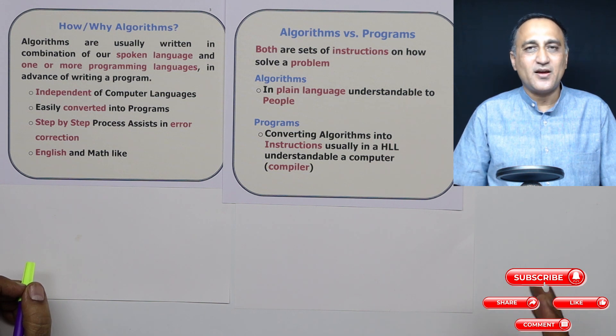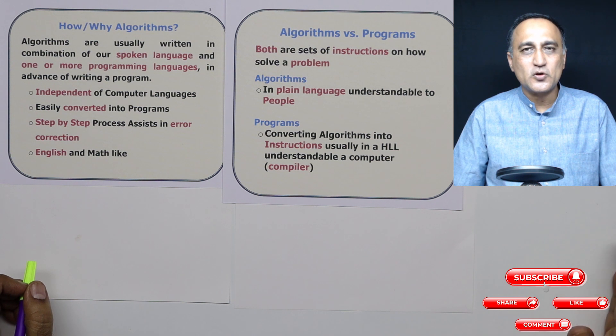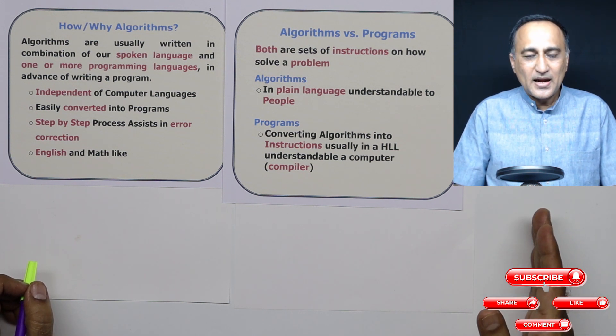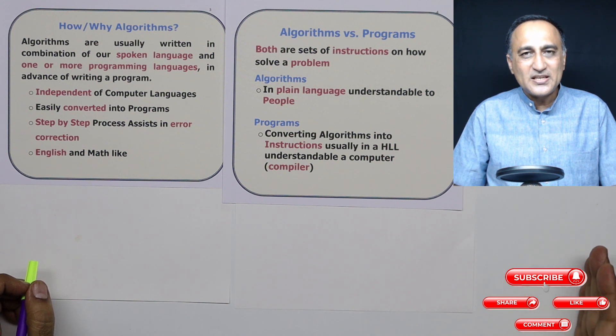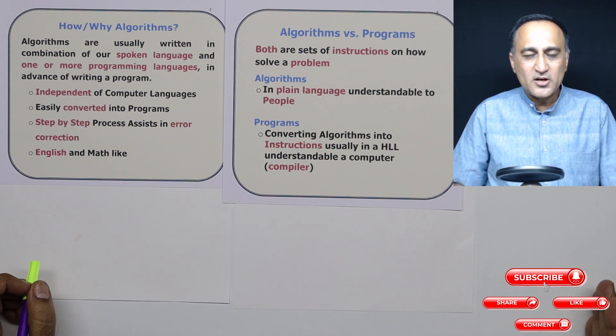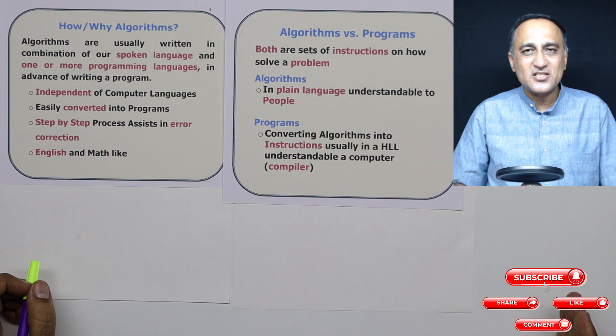So I hope the difference is clear. Algorithms is for people like me and you to understand how you are solving a problem. But we take the algorithmic approach and convert it into a series of instructions in a high-level language like C, C++, Java, Python, Fortran, COBOL and so on, so that those instructions are understandable by a computer.